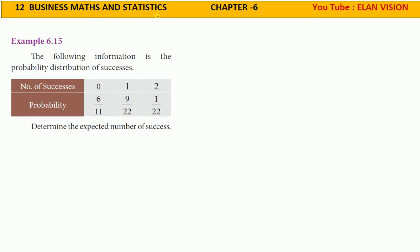12th standard Business Maths and Statistics, Chapter 6, YouTube channel Elan Vision, Example 6.15. The following information is the probability distribution of successes. Determine the expected number of success, E(x) value.